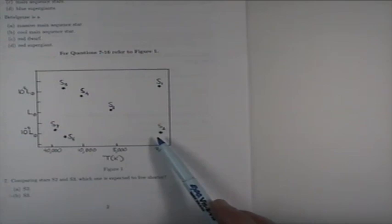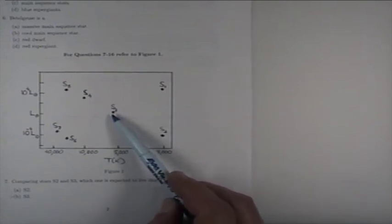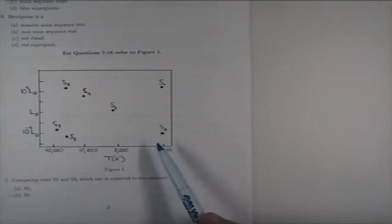According to Eddington's mass luminosity relation, we just found out that the more massive is the star, the shorter it lives. S3 being more luminous and more massive, main sequence star is going to live for the shorter period of time compared to S2.